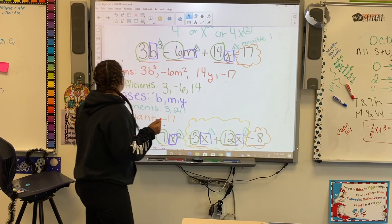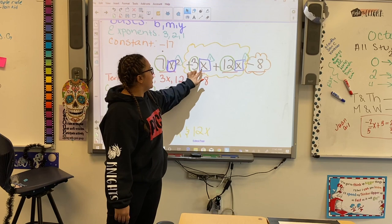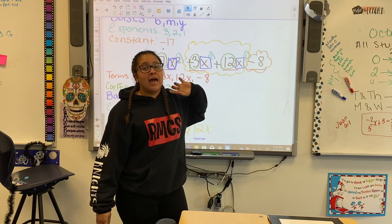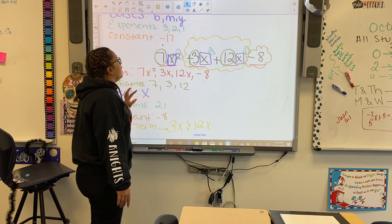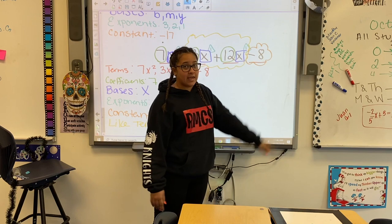So if we scroll down to this one right here: 7x squared plus 3x plus 12x minus 8. What we need to see is how many terms do we have. Let's count: one term, two terms, three terms, and our last term — four terms. We have 7x squared plus 3x plus 12x minus 8.